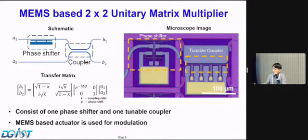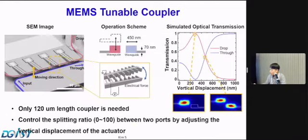One of the solutions for scalable matrix multiplier is using MEMS. Here we introduce the MEMS-based unitary matrix multiplier. You can see the schematic on the left side and the microscopic image on the right side. The unitary gate consists of one MZI for power distribution and another phase shifter for phase. Our system only needs one phase shifter and one tunable coupler.